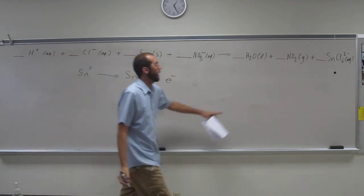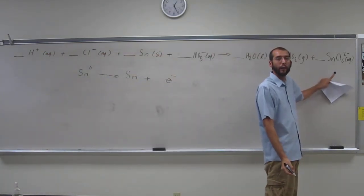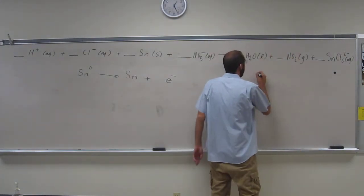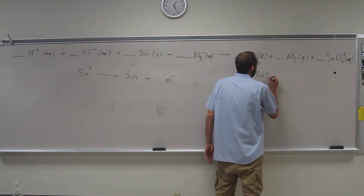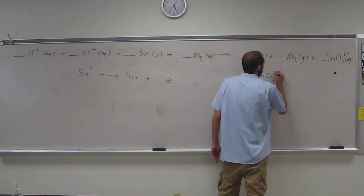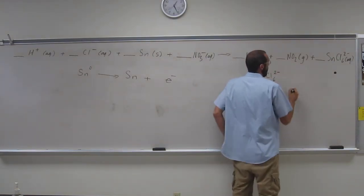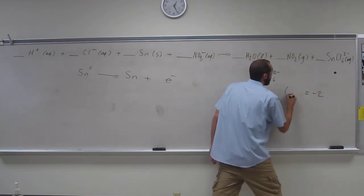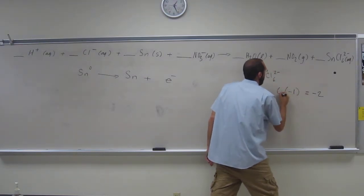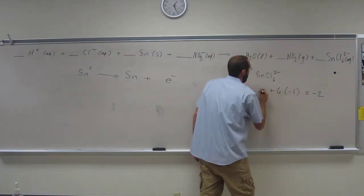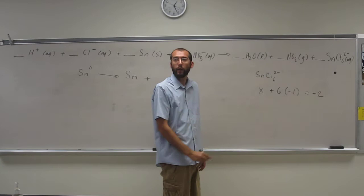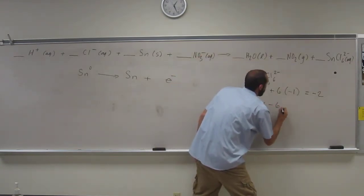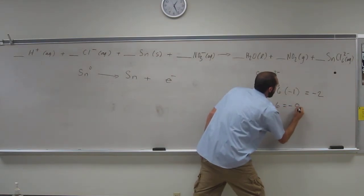So how do we figure out what the oxidation state of tin is over here? Do what we've been doing in the last other problems. So SnCl6 two minus, the whole thing. Cl is minus one, plus x, so x minus six equals minus two.